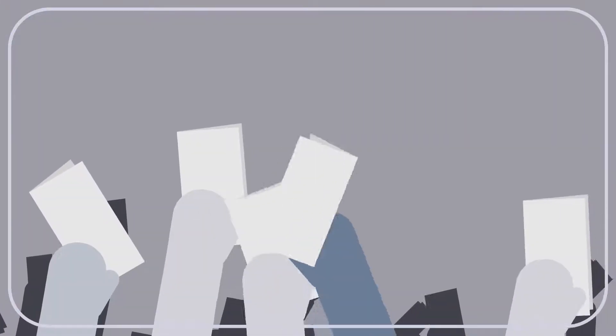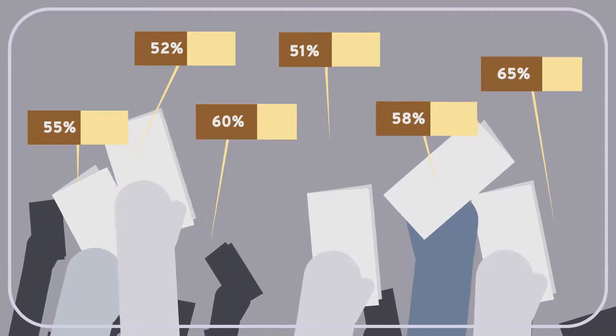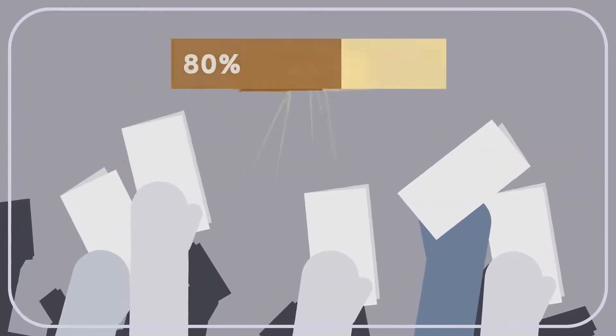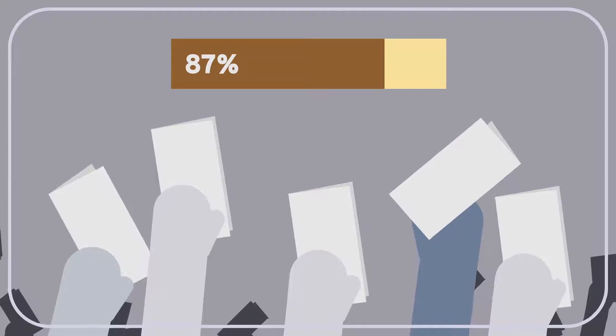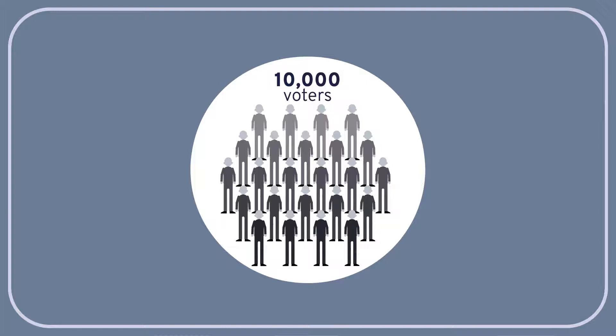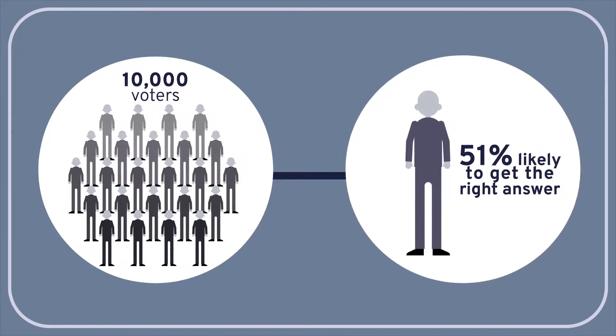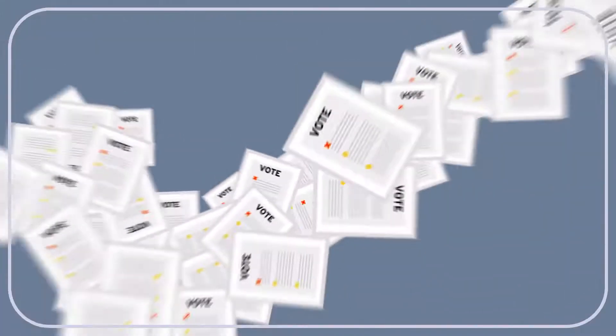The same principle applies to voters. If each voter is more than 50% likely to be correct about the answer to a question, taking a vote and going with the majority's opinion is significantly more likely to lead to the right answer. Remarkably, Condorcet showed, if you have 10,000 voters and each voter is only 51% likely to get the right answer, the answer that gets the most votes is almost certain to be correct.